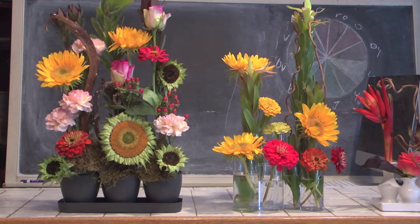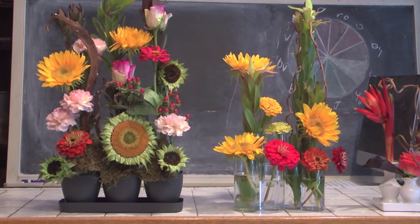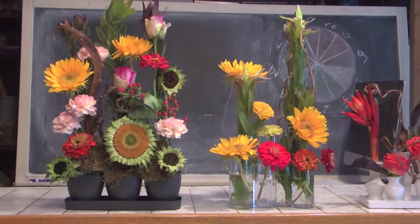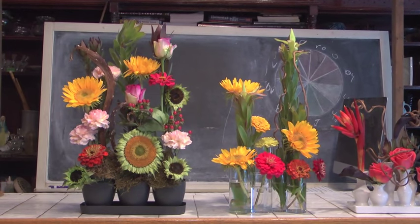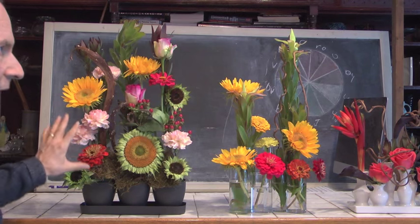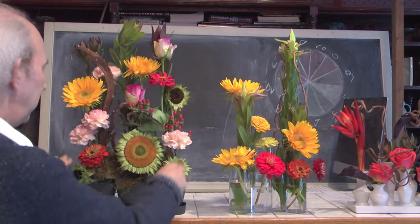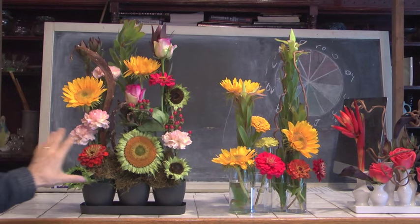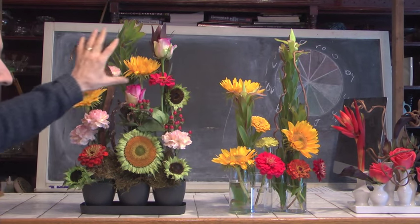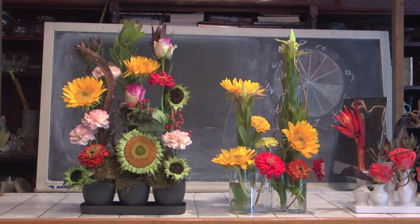Here is a very, very simple container — three plastic containers that are built onto a tray. In this particular case, we have something done in a hedge fashion. A hedge basically is something that is almost square, rectangular, and there's lots of density within it. It's not separate as in a parallel kind of structure. And in this particular one, we have all kinds of things.